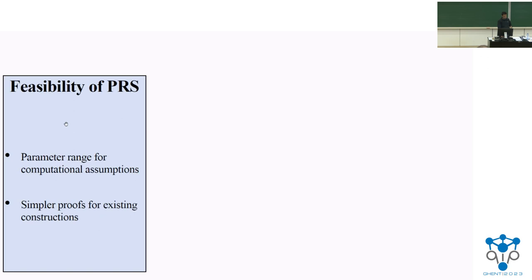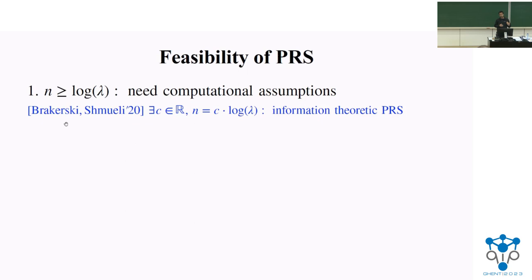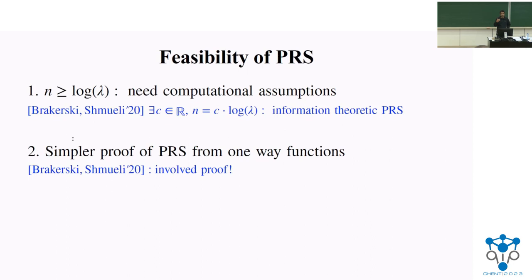Let me jump into the results in more detail, starting with the feasibility of PRS. We show that if you have a PRS with output length larger than logarithmic in the security parameter lambda, then you need computational assumptions to construct pseudorandom states. This is tight because it was shown that for some constant C, you can construct a PRS with output length C times log lambda information-theoretically. So log lambda is the best you can do for information-theoretic constructions. We also give a simpler proof of the construction of PRS from one-way functions.